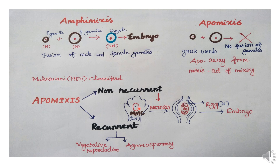This undergoes meiotic division. One megaspore mother cell undergoes meiotic division. In the same way, there are megaspores involved in which the embryo is produced. For monosporic embryo, in the four megaspores, three degenerate. The remaining one is the functional megaspore for embryo development.